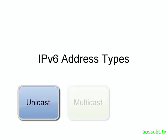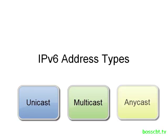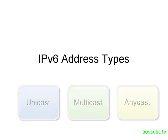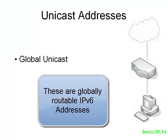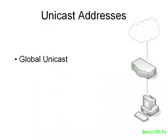The first type is the unicast address, the second is multicast, and the third is called anycast. A unicast address is one that is assigned to a single interface only. With IP version 6 there are three classes of unicast addresses. The first is called the global unicast, which is the equivalent to IP version 4 public addresses — a globally routable public IP address. A device using one can route to and from anything else on the internet.